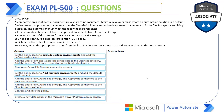Hello techies, in this session we will test our knowledge on DLP policies in Power Platform Admin Center. The PL-500 exam question is: a company stores confidential documents in a SharePoint document library. A developer must create an automation solution in the default environment that processes documents from the SharePoint library and uploads approved documents to Azure file storage for archiving. The automation must prevent modification or deletion of approved documents from Azure file storage, and prevent sharing of documents from SharePoint or Azure file storage.